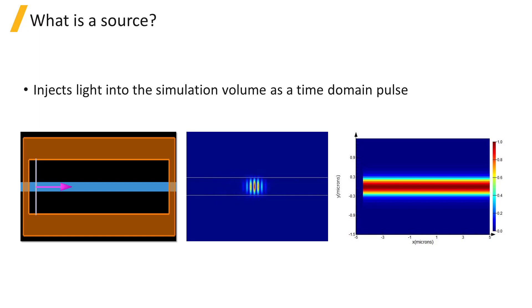A source pulse can be seen propagating through a straight waveguide in the movie here. By default, the source pulse shape is automatically generated based on the specified frequency or wavelength range of the source.